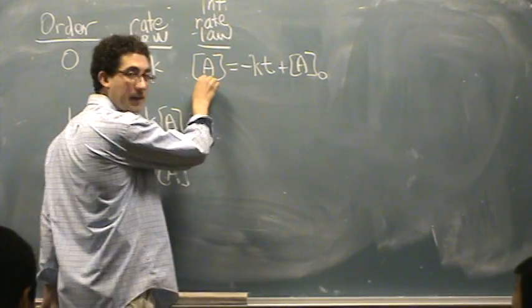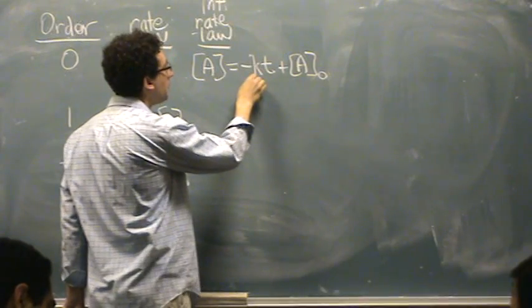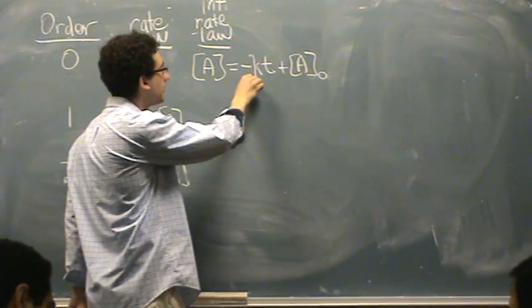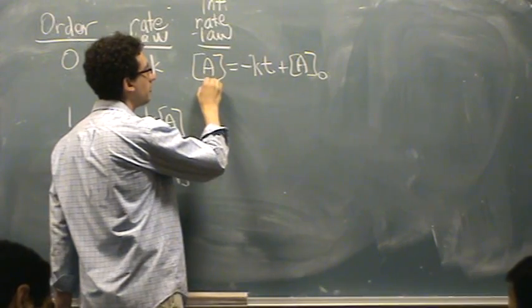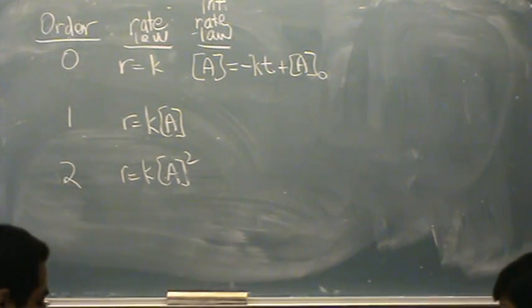And that's this way. A equals minus kt plus a naught. So this is y equals mx plus b. So m is minus k, that's the slope. So it's a versus t, so y versus x, and then a naught, in this case, is the y-intercept b.